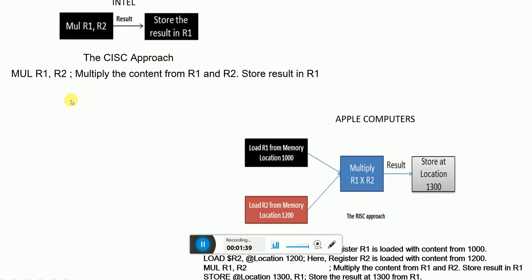To get into a better understanding, I will show you an example. Now, to multiply two numbers in registers R1 and R2, I can directly use an instruction called MUL R1, R2 in the CISC approach, which is Intel's approach. Here, I directly have a multiplication instruction available which can access the contents from registers R1 and R2 and store the result back to R1. This is Intel's approach.